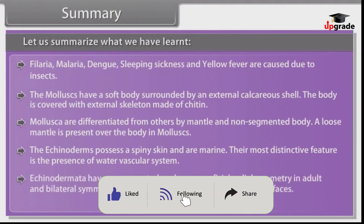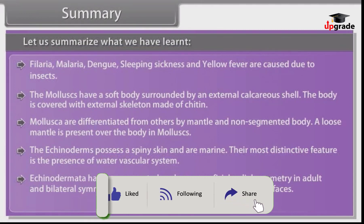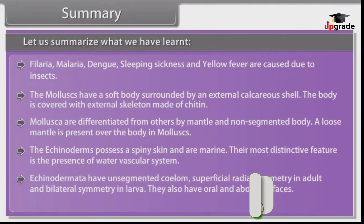Echinoderms possess spiny skin and are marine. Their most distinctive feature is the presence of a water vascular system. Echinodermata have an unsegmented coelom, superficial radial symmetry in adults and bilateral symmetry in larvae. They also have oral and aboral surfaces.